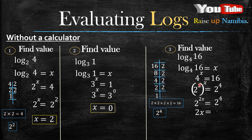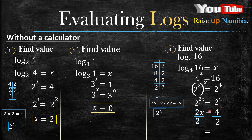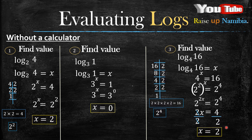We use the power law to get rid of the brackets — we multiply the exponent 2 by the x outside the bracket to get 2x. This comes down, and since our bases are the same, our exponents are equal: 2x equals 4. From here it's a linear equation — we divide both sides by 2, giving us x equals 2. That's our final answer.